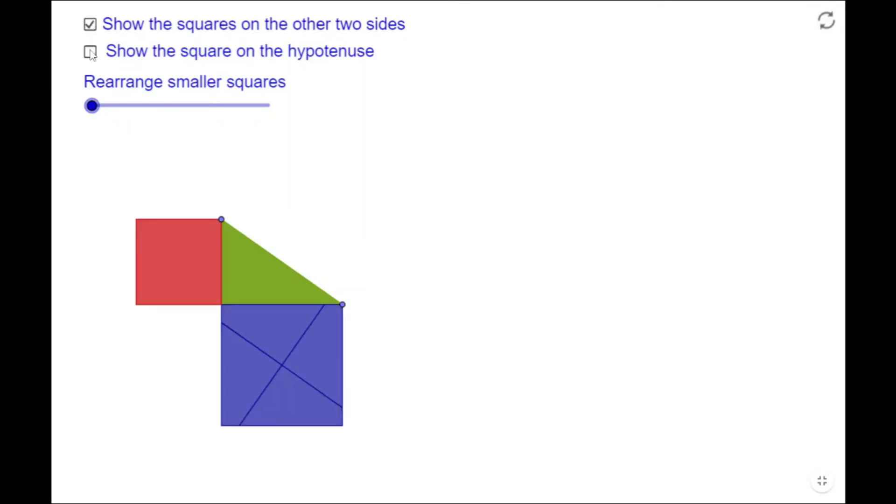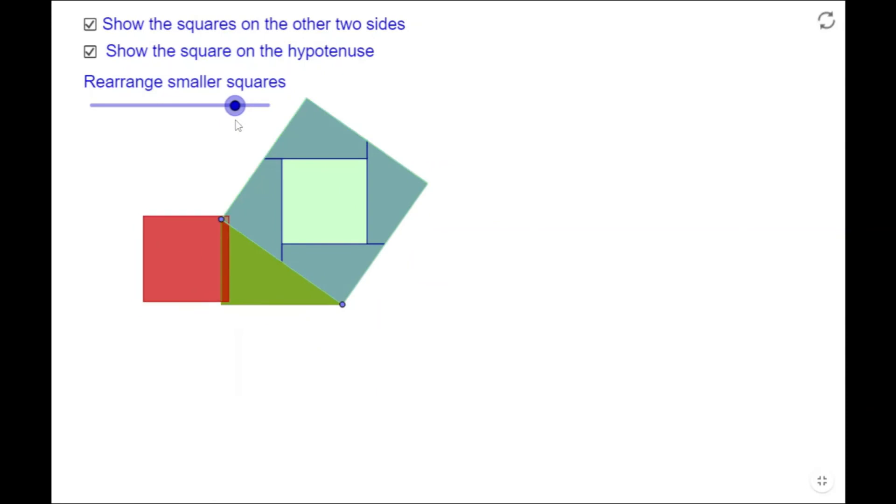Now, let us see how you are supposed to cut these two squares and arrange on this bigger square on the hypotenuse. I will provide the link of this GeoGebra resource in the description box. Please go through it once.